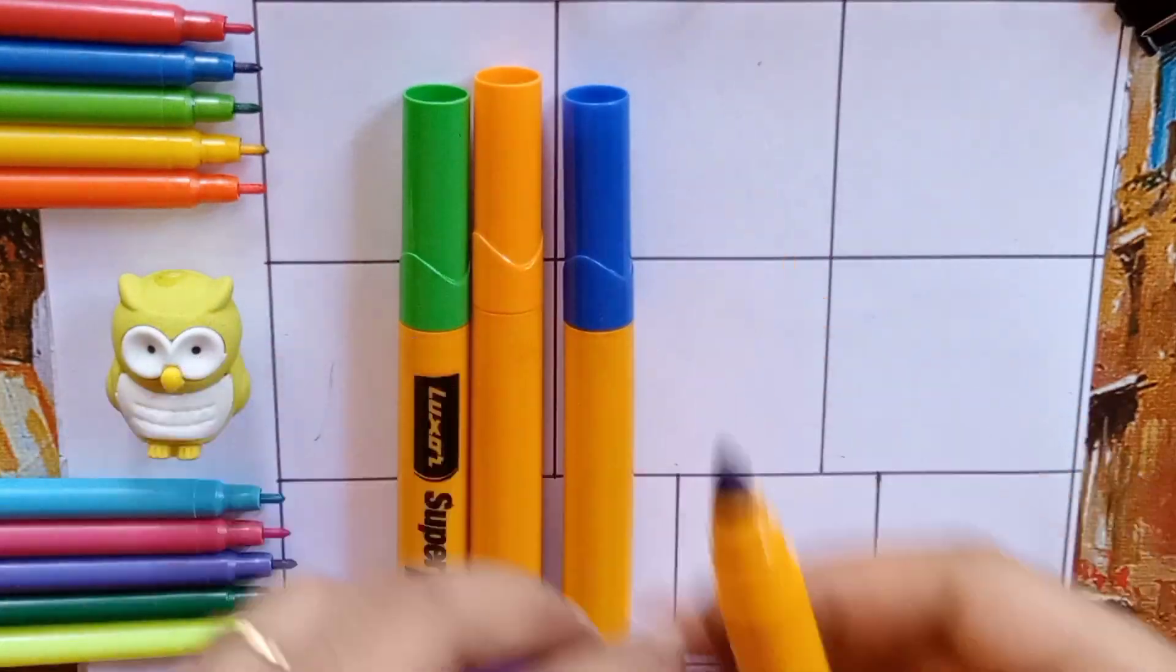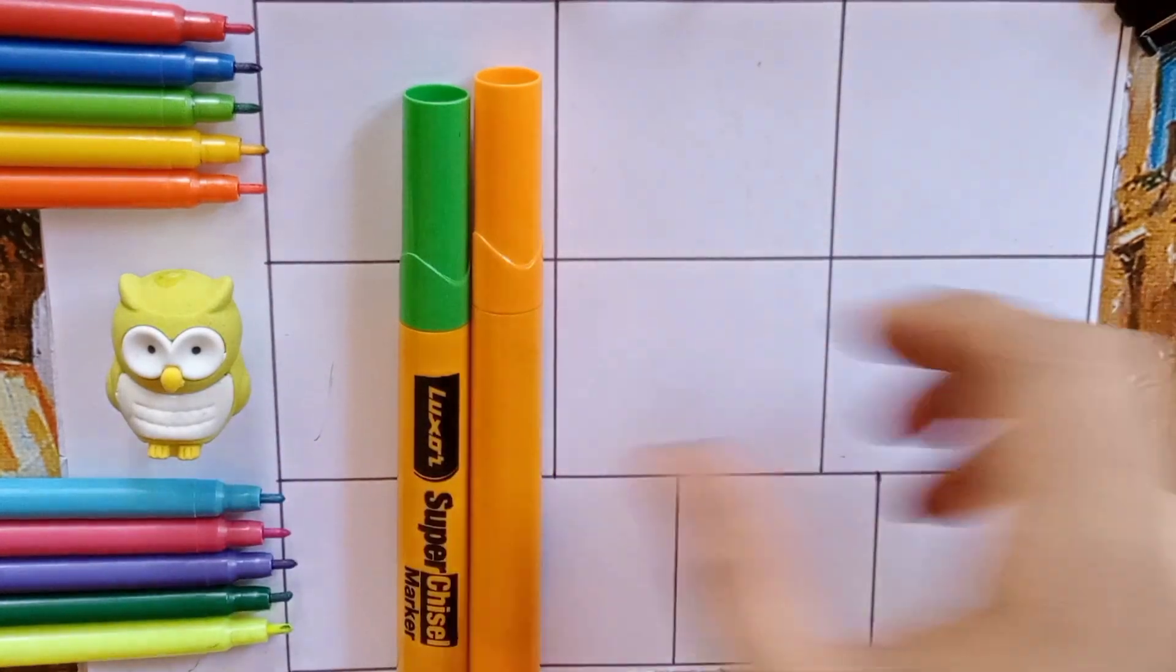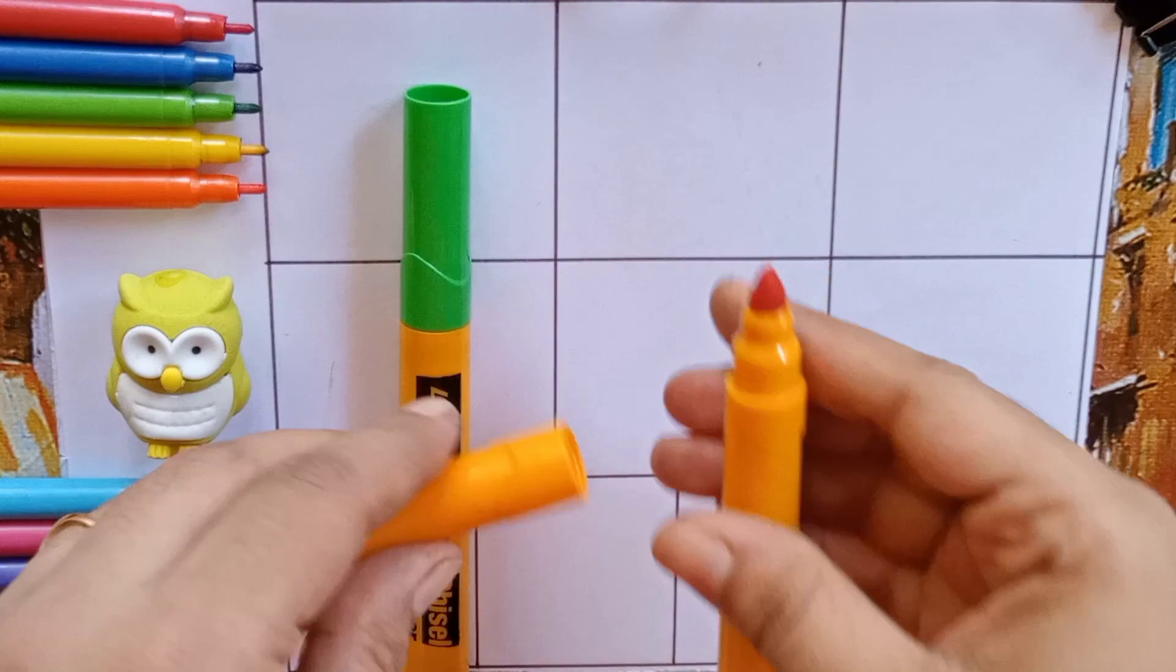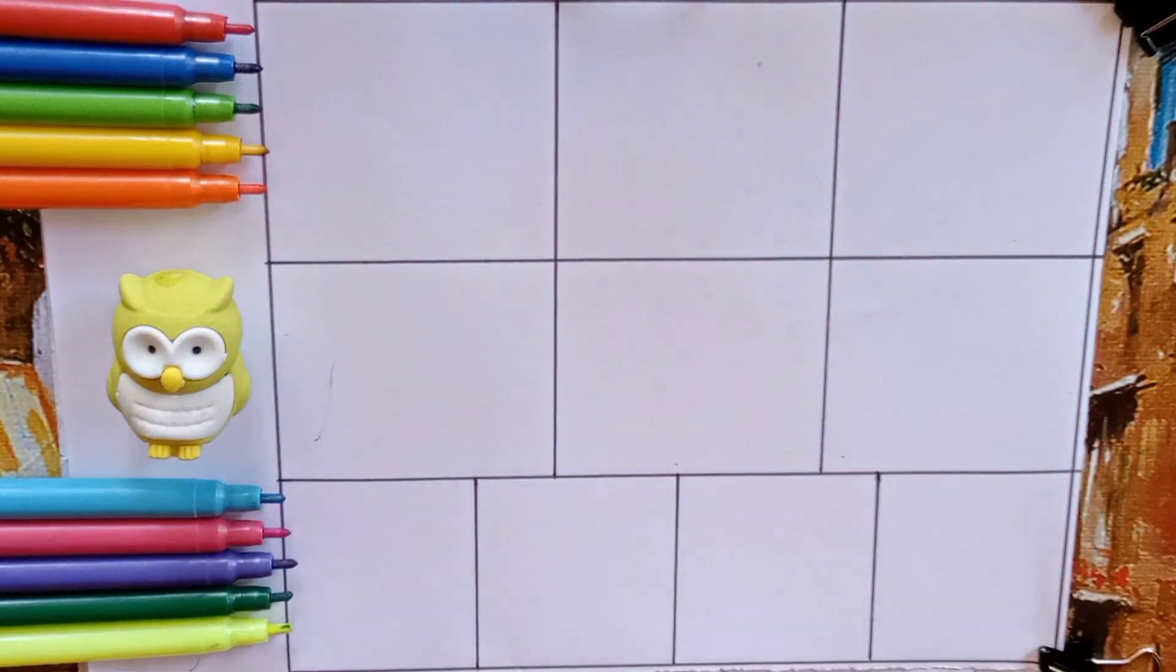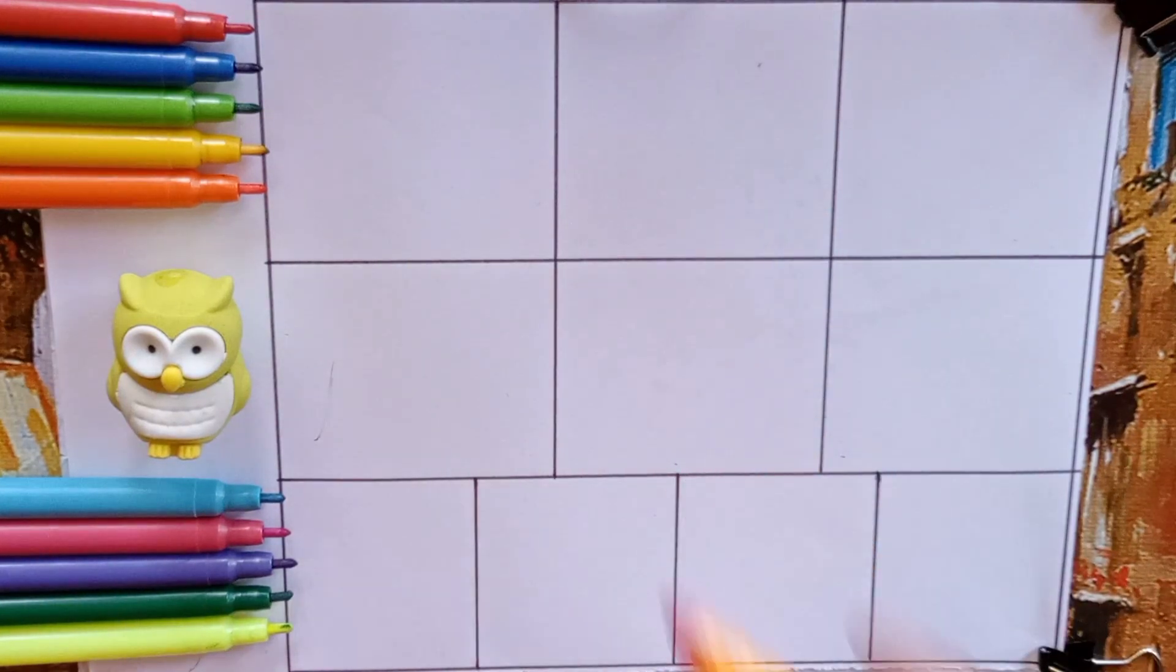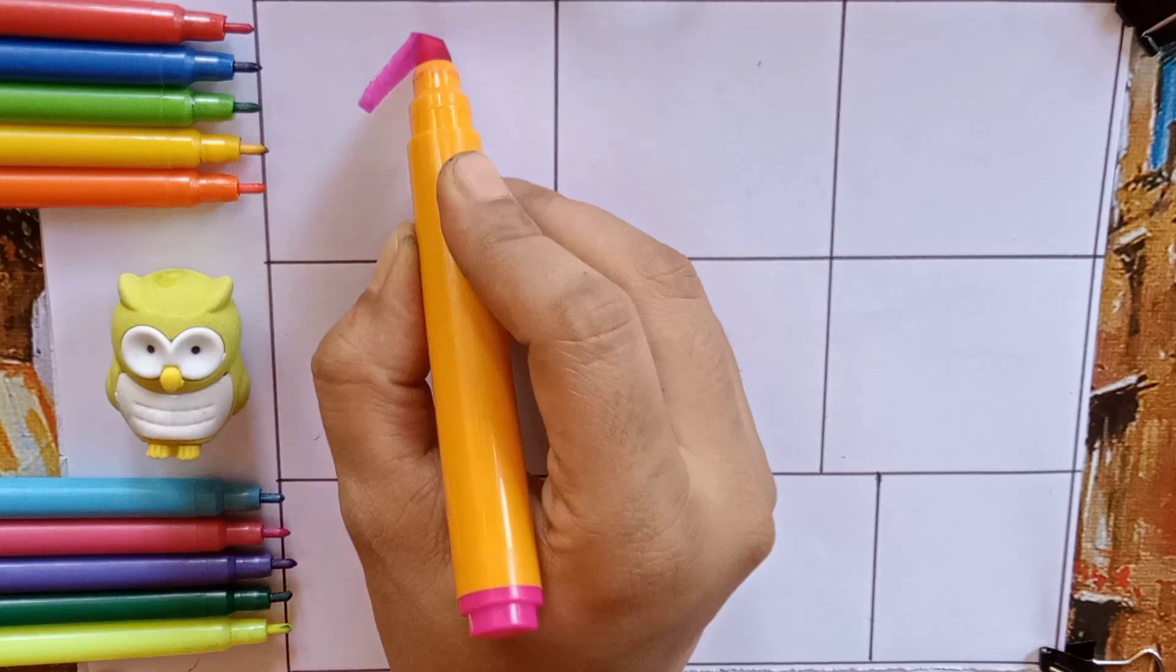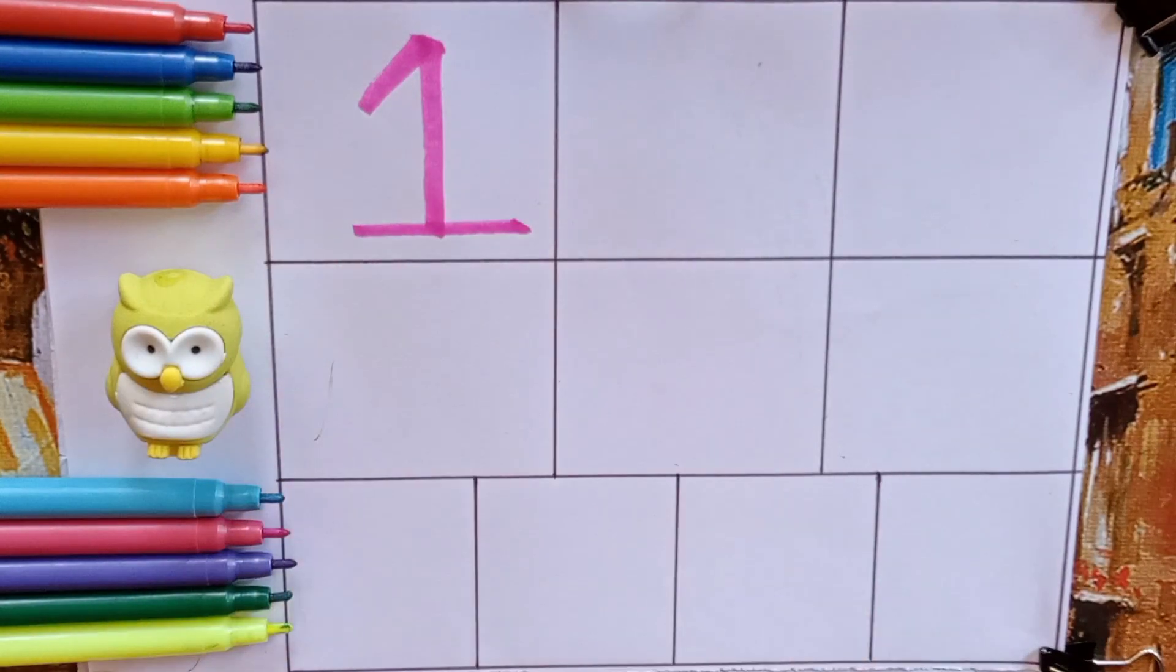Let's learn numbers. Pink one, O-N-E, one. Blue two, T-W-O, two. Red three, T-H-R-E-E, three. Purple four...